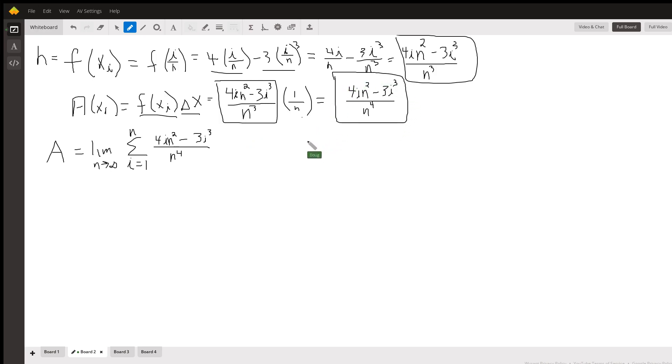Now the total area we're going to say is the limit as n approaches infinity of the sum from i equals 1 to n of all these areas. The question is, how do you evaluate that limit? And that's where you need summation theorems.